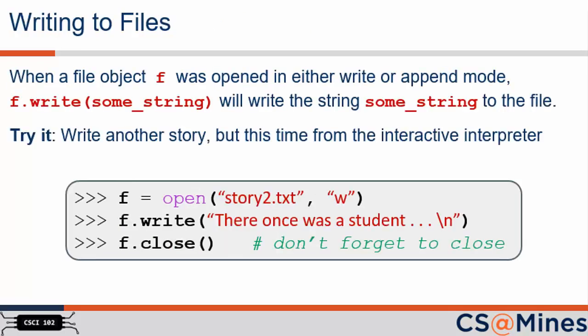Now that we know how to read files, we need to learn how to write files, too. For writing, we use the write function, which is another function that we call with a dot operator on our file object. The write function will then write the string provided to the file. If we opened our file in write mode, then the write function will overwrite any existing file with our new string. If we open the file in append mode, then the write function will append our string to the end of the existing file. Try it! Write another story, but this time write it with the interactive interpreter. And be sure to call the close function listed, which we'll talk about next.